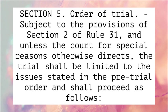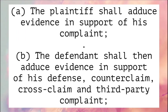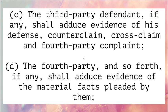Section 5, Order of Trial. Subject to the provisions of Section 2 of Rule 31, and unless the court for special reasons otherwise directs, the trial shall be limited to the issues stated in the pre-trial order and shall proceed as follows: (a) the plaintiff shall adduce evidence in support of his complaint; (b) the defendant shall then adduce evidence in support of his defense, counterclaim, cross-claim, and third-party complaints; (c) the third-party defendant, if any, shall adduce evidence of his defense, counterclaim, cross-claim, and fourth-party complaint.